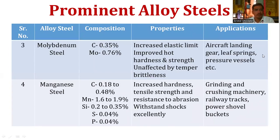The next alloy steel is molybdenum steel, which contains 0.35 percent carbon and 0.76 percent molybdenum. Its properties include increased elastic limit, improved hot hardness and strength, and it is unaffected by temper brittleness. Applications include aircraft landing gears, lifting rings, and pressure vessels.